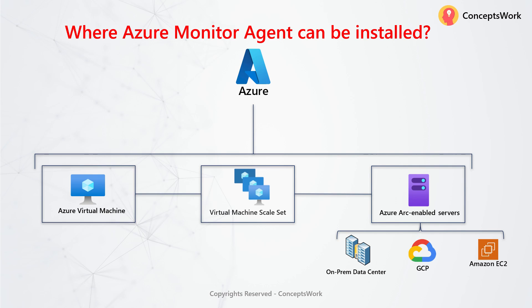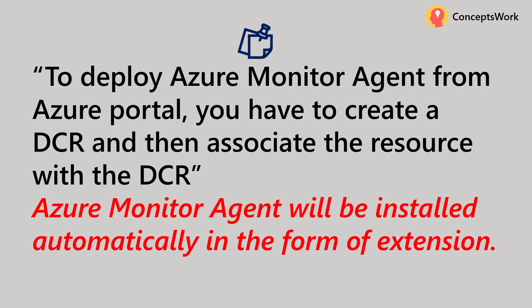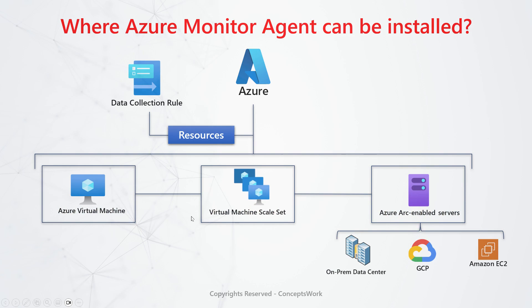The question is how exactly this deployment of Azure Monitor Agent is going to happen. To deploy Azure Monitor Agent from the Azure portal, you have to create a DCR first, then associate the resource with the DCR, and then Azure Monitor Agent will be installed automatically in the form of an extension. Once you have onboarded the machines with the help of Azure Arc, all you have to do is scope these resources when creating the data collection rule.